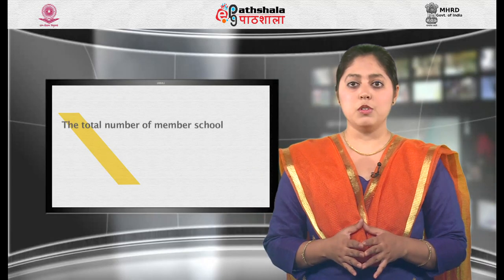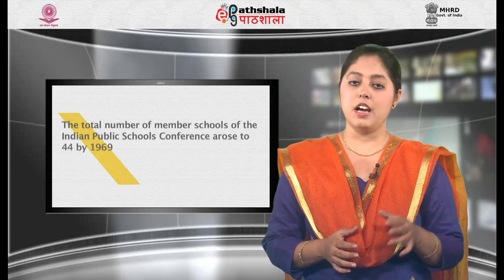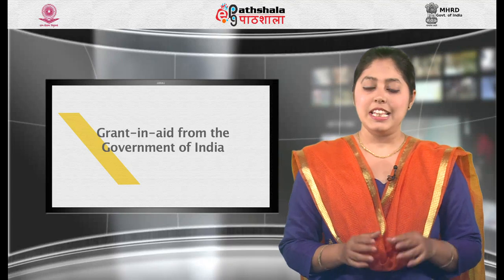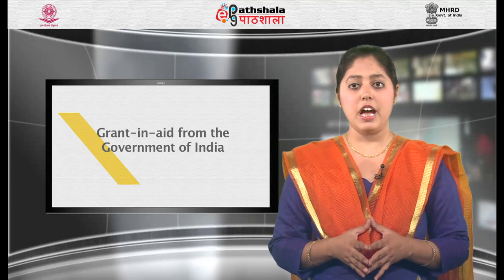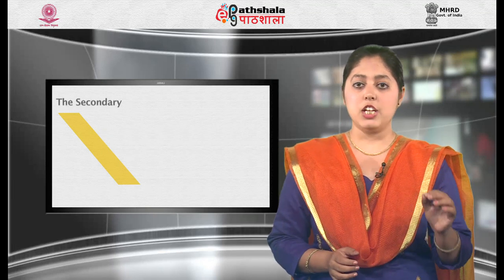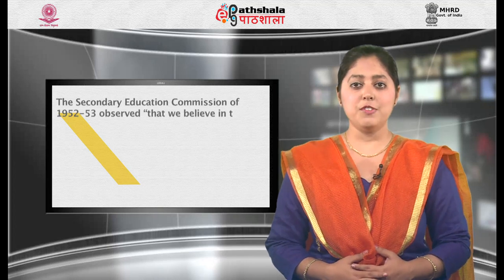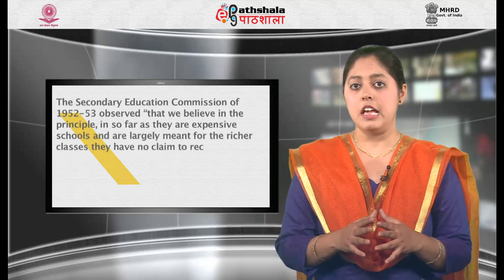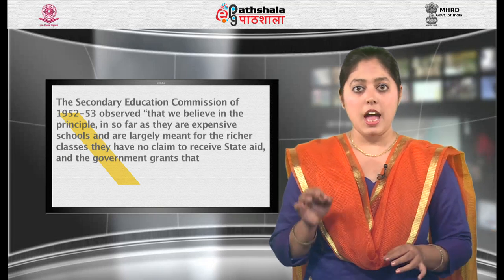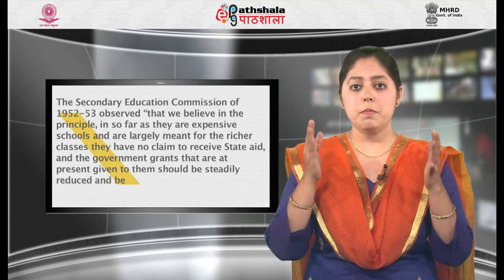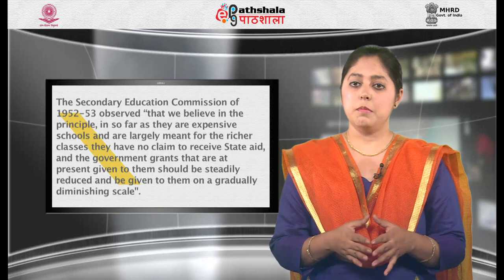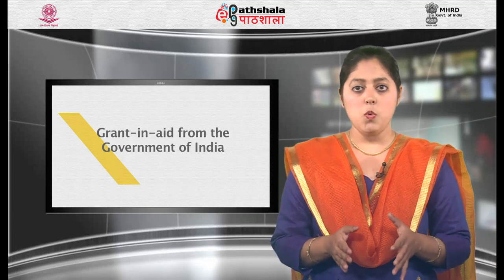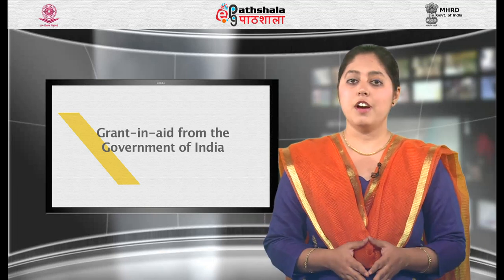The total number of member schools of the Indian Public School Conference rose to 44 by 1969. Till independence and even a few years after it, these schools continued receiving handsome grants from the Government of India as well as from the state governments. The Mudaliar Education Commission of 1952-53 observed that, as expensive schools largely meant for the richer classes, they have no claim to receive state aid, and the government grants given to them should be steadily reduced. Within a few years of these recommendations, the government grants were withdrawn, but now these institutions are self-sufficient in respect of financial liability.